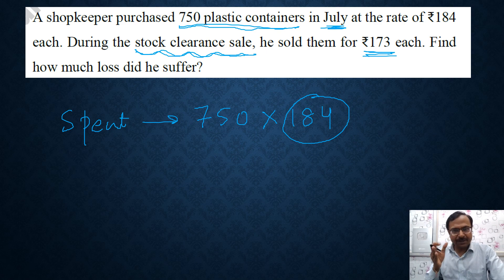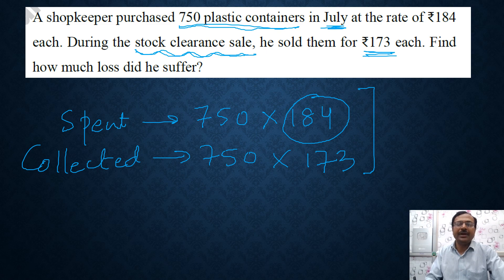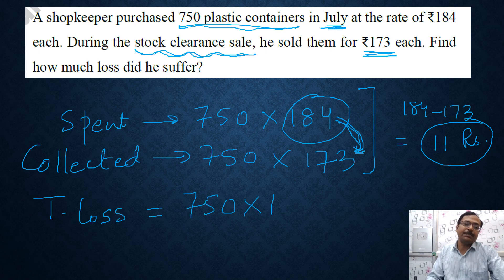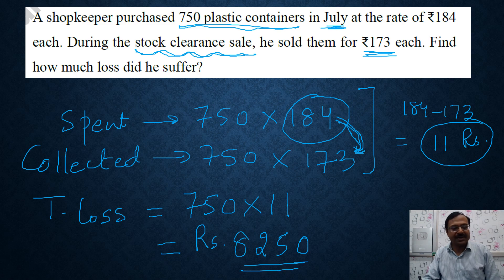Instead of multiplying 750 by 184 and 750 by 173 separately and then subtracting, the smarter approach is to find the difference between the cost price and selling price per item first: 184 minus 173 equals 11 rupees. So he is losing 11 rupees on each container. The total loss is simply 750 times 11, which equals 8,250 rupees. That is the loss suffered by the shopkeeper.